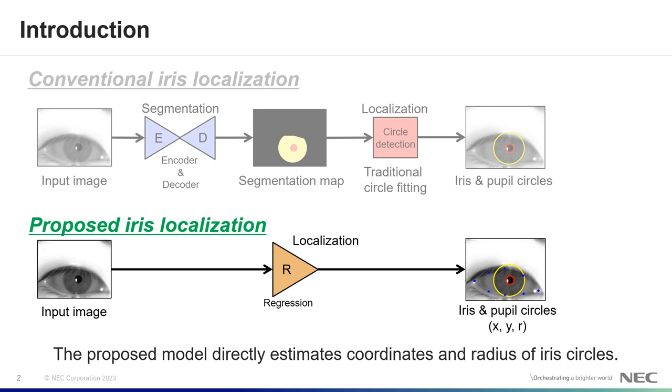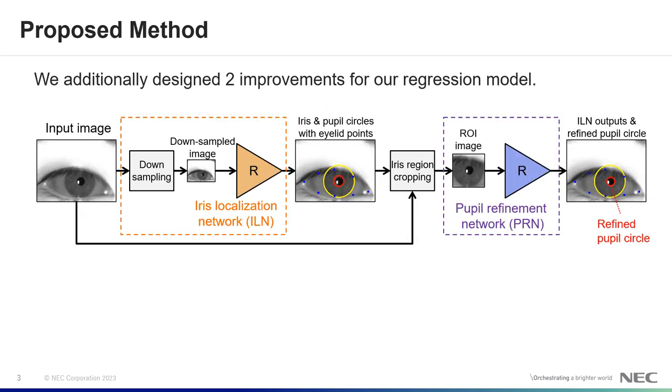It can skip segmentation and traditional circle fitting so that it achieves fast and robust localization. We additionally designed two improvements for our regression model to achieve higher speed and accuracy.